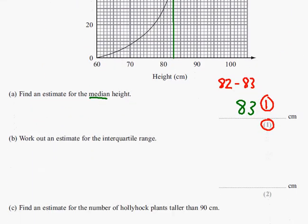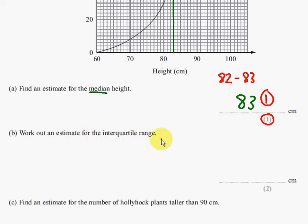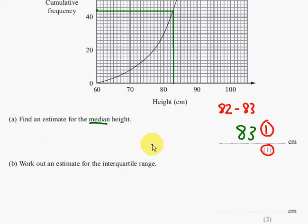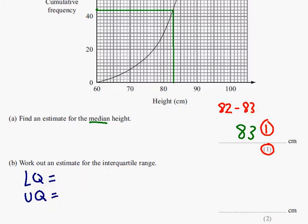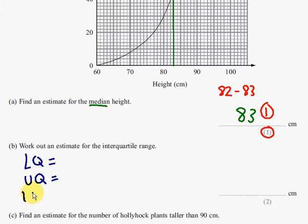So part B says, work out an estimate for the interquartile range. So the interquartile range, we're going to need the lower quartile and the upper quartile. And then we're going to do the interquartile range, where you do upper quartile take away lower quartile.